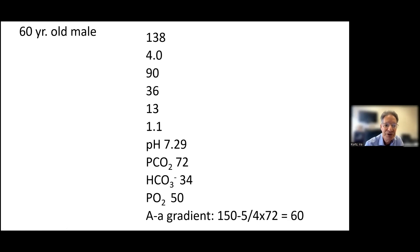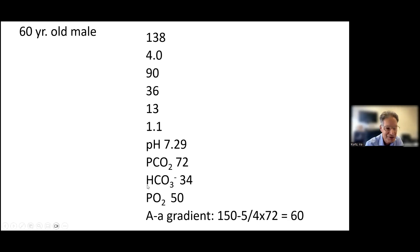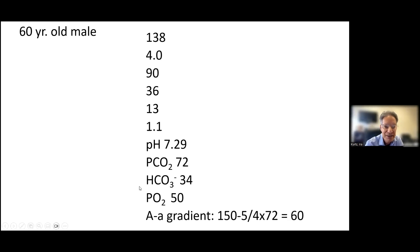The terminology for respiratory acid-base disorders is just acute or chronic. Chronic implies that the kidney has done what it's going to do. We only use the word 'compensation' in metabolic acid-base disorders. So yes — it could be chronic respiratory acidosis, which means compensated. As soon as you say 'chronic,' you're saying the kidney has raised the bicarbonate to the predicted value.